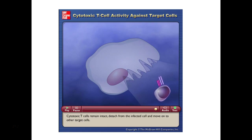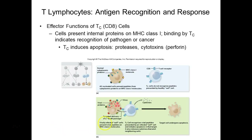That cytotoxic CD8 T cell can then find other nearby cells and eliminate them if they're expressing that foreign antigen. The effector functions of CD8 cytotoxic T cells: they communicate via MHC class 1, recognize infected cells, cause programmed cell death — apoptosis — without eliciting inflammation.